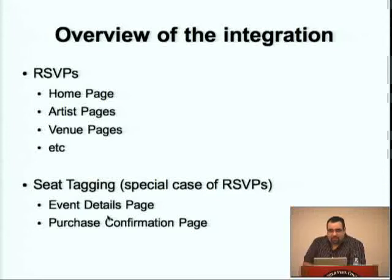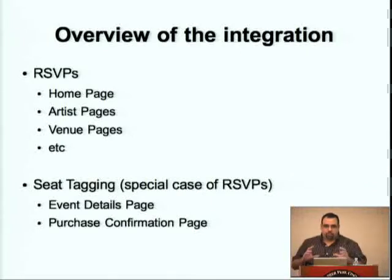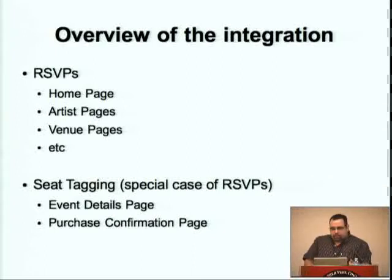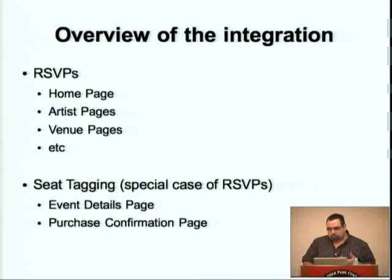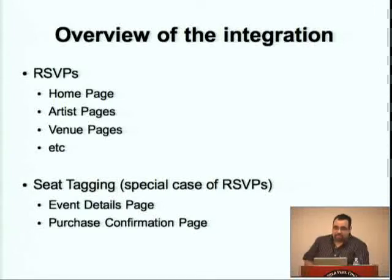One location is the event details page, because that's where the actual map is shown where the user can select where they're sitting. Also on the confirmation page, after you make a purchase, if you didn't do it on the event detail page, you can do it there. Or after a purchase, you can go back to the event detail page, mark what seats you bought, and tag your friends.